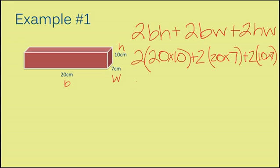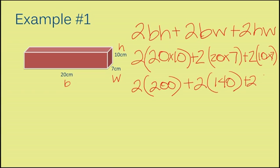So, now I'm going to go ahead and go through and just multiply all of my numbers that are inside my parentheses. So, here I have 2. I'm going to multiply that by 20 times 10, which is 200. I'm going to add that to 2. And now I have 20 times 7, which is 140. And then I have 2 again and 10 times 7, which is 70.